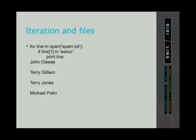This example checks if the second character of each line is a lowercase vowel, and if this condition is true, the program prints the line. As you can see, the program printed 4 out of 6 lines.